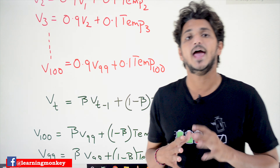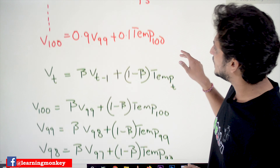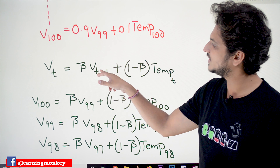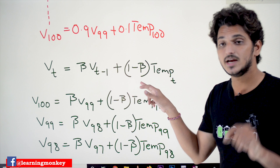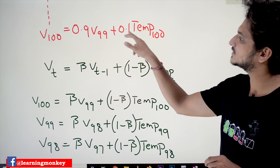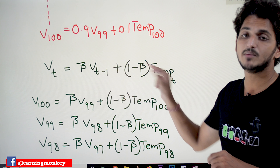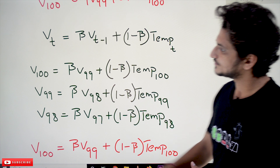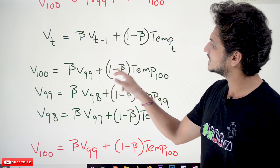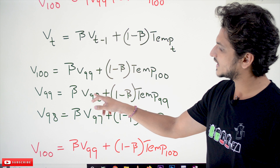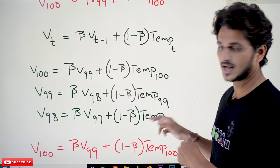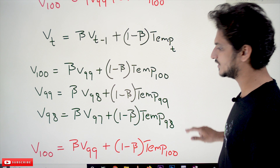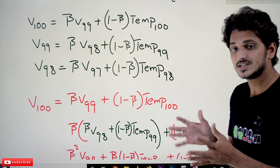This is how we calculate the exponential weighted average. The general equation is: Vt = β * Vt-1 + (1 - β) * tempt. Since 1 minus 0.9 is 0.1, that is why we write (1 - β) * tempt. So for V100: V100 = β*V99 + (1-β)*temp100. V99 = β*V98 + (1-β)*temp99. V98 = β*V97 + (1-β)*temp98. This is the general form of the equation.